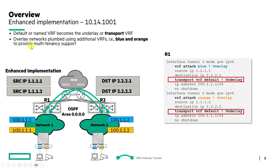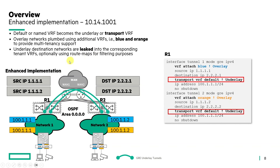Overlay networks are plumbed using additional VRFs — blue and orange — to provide multi-tenancy support. Underlay destination networks are leaked into the corresponding tenant VRFs, optionally using route maps for filtering purposes. BGP sessions are then established over these GRE tunnels.